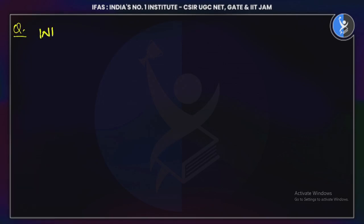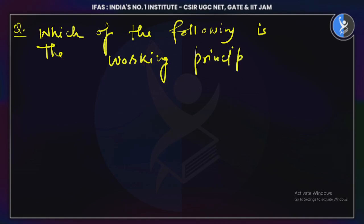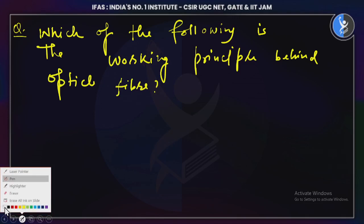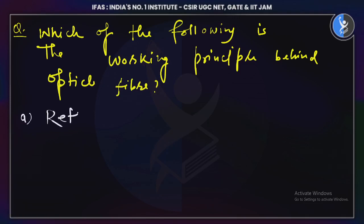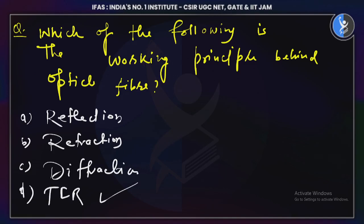Which of the following is the working principle behind optical fiber? The answer is total internal reflection. Optical fiber works on the principle of total internal reflection.